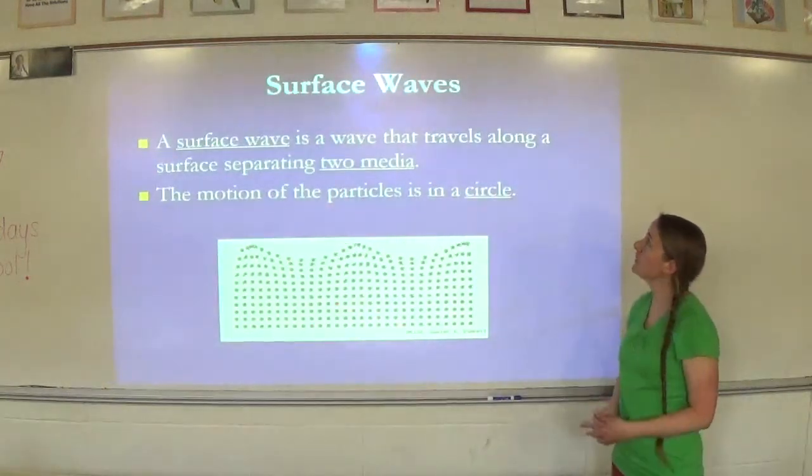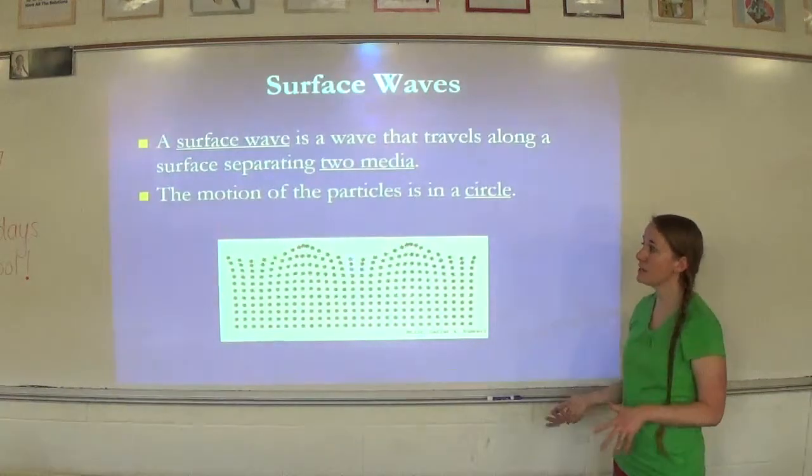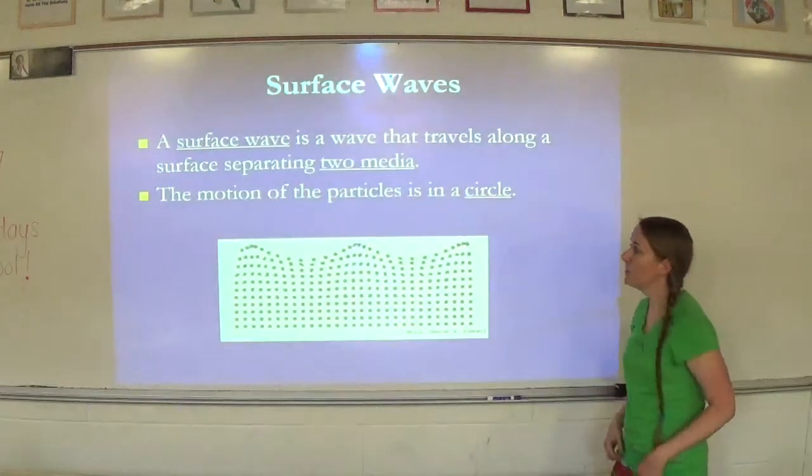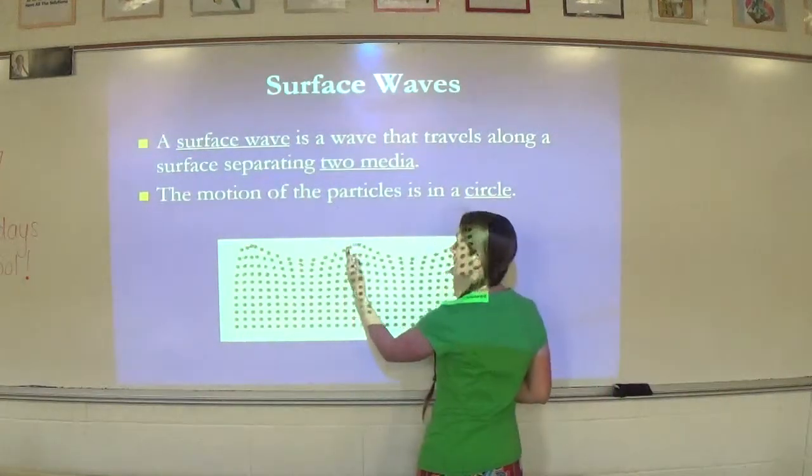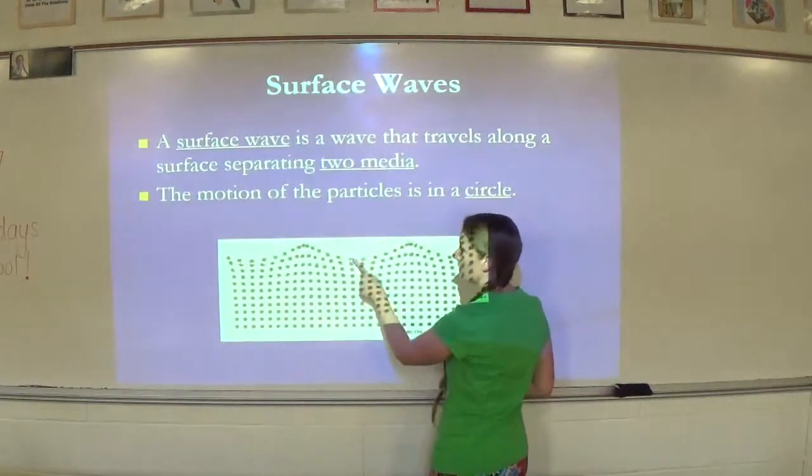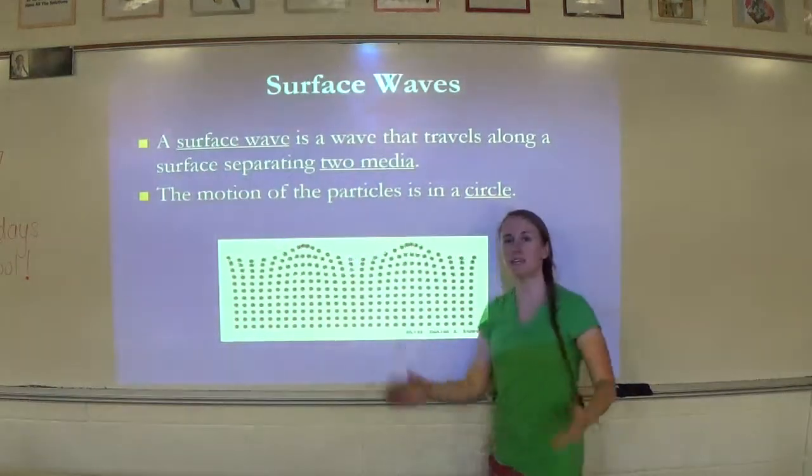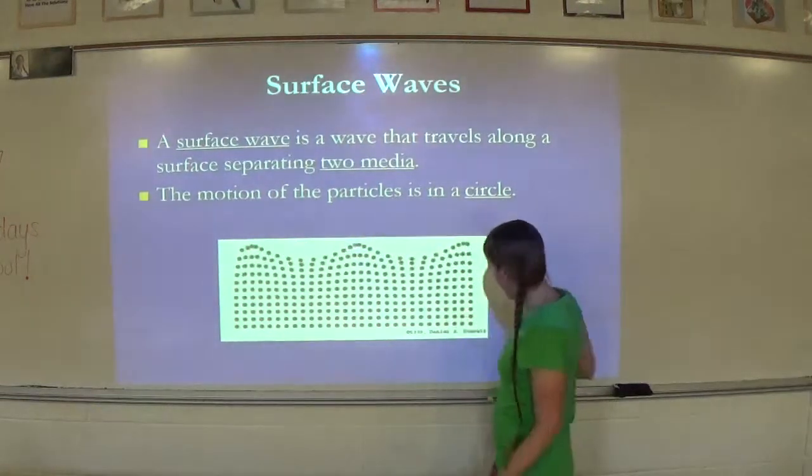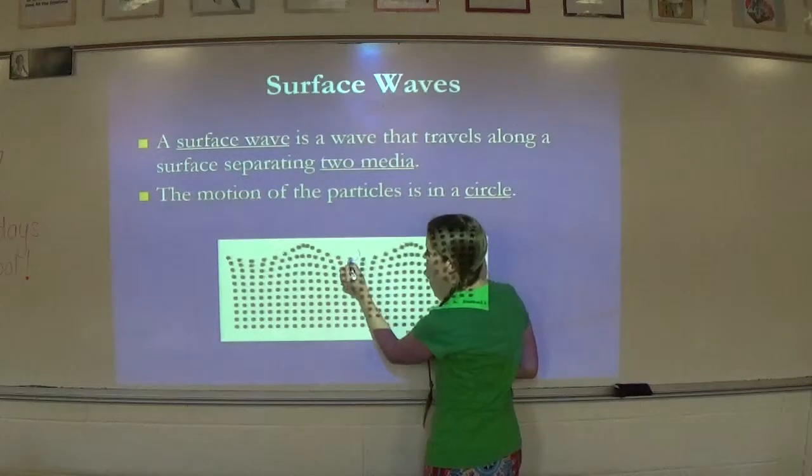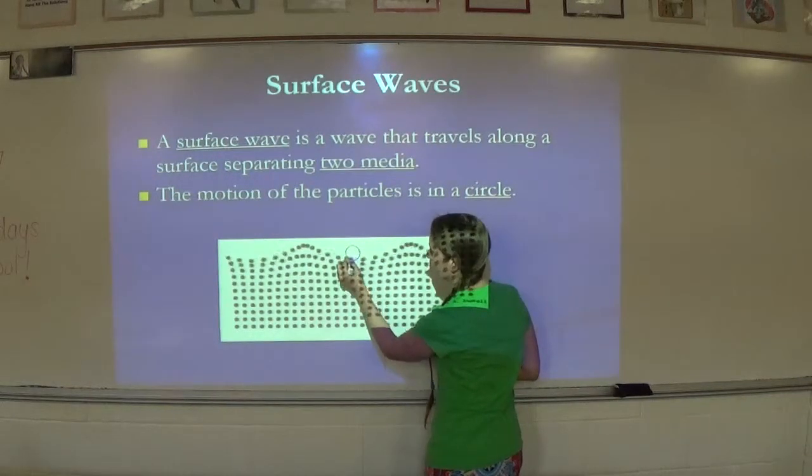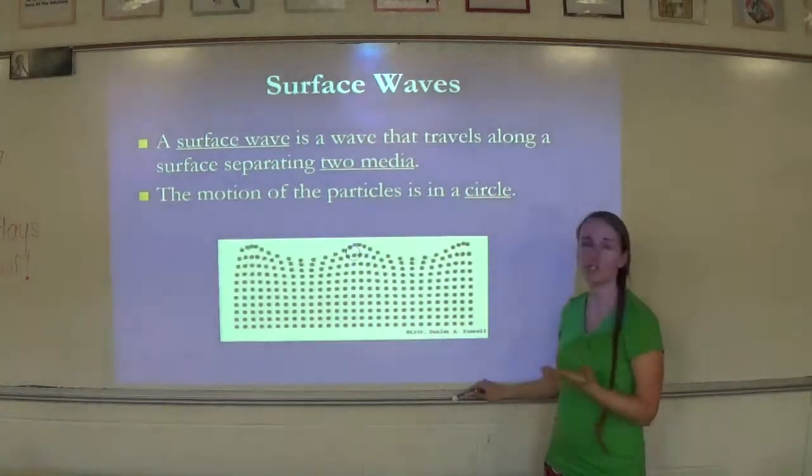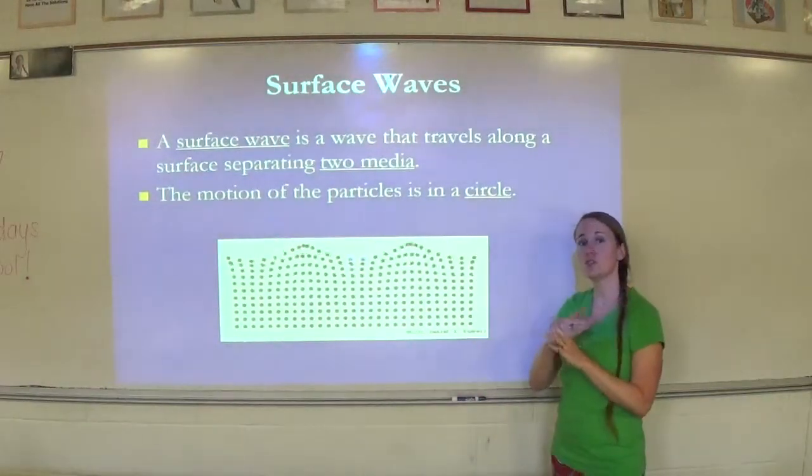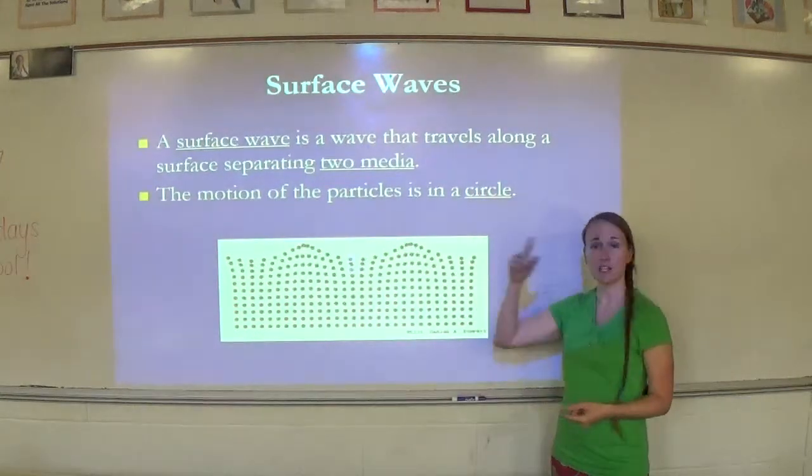A surface wave is a wave that travels along a surface separating two media. The motion of the particles is in a circle. So this is where we would have like ocean waves. Here's the wave traveling, but if you watch the particles, especially this blue one, they give you a highlighted one. If you watch, it's just moving in a circle. So transverse is at right angles, longitudinal is parallel, and surface area is in a circle.